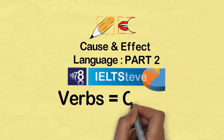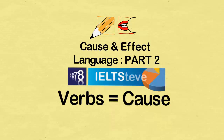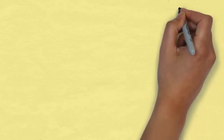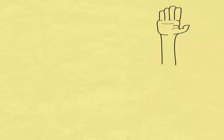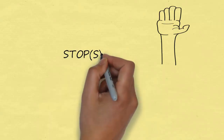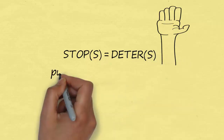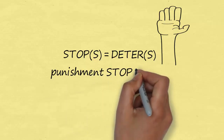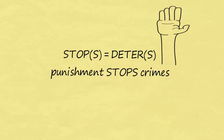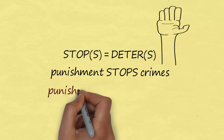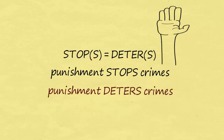Let's give some more examples now of other language we can use. A very simple way to use cause and effect language is just to use a verb that infers a causal relationship. We can use a simple verb like 'stop' — so 'punishment stops crimes' — but we could be a bit more academic and use the word 'deter'. So 'punishment deters crimes'. That's active. We've got crimes as the effect and punishment as the cause.